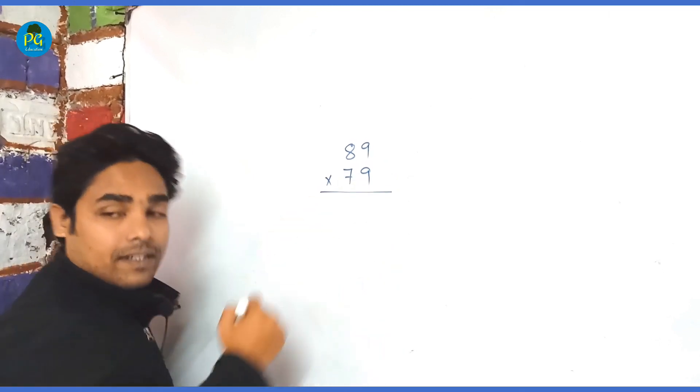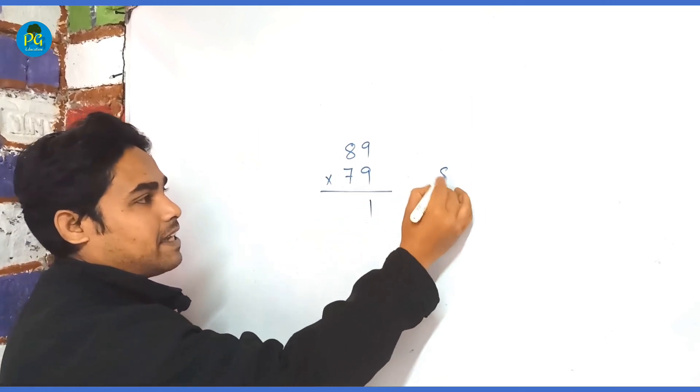Here the rule is, 9 nines are 81. 1, 8 in hand.